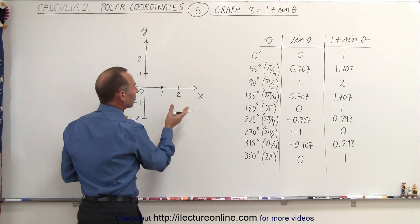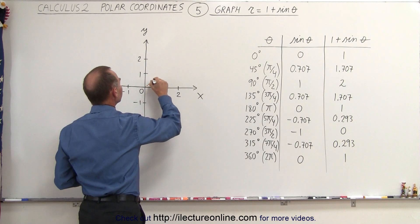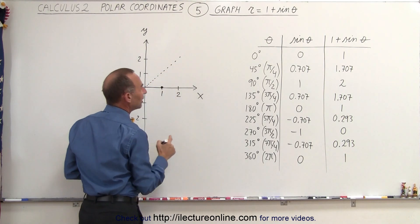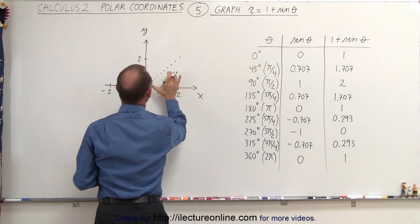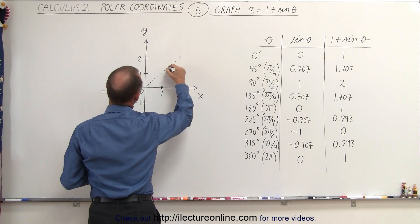So it'll be right here. At a 45-degree angle, the function is 1.707, almost equal to 2, about right there.